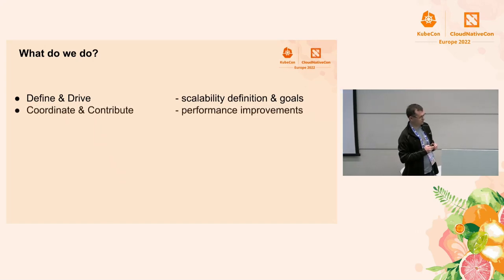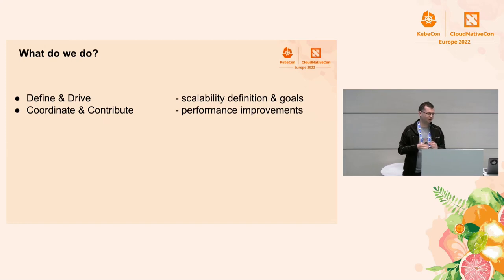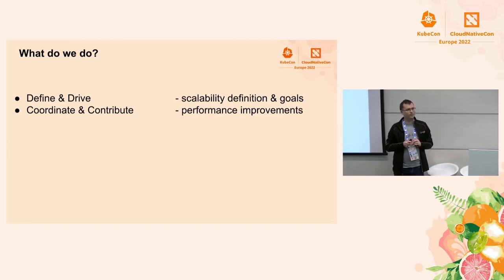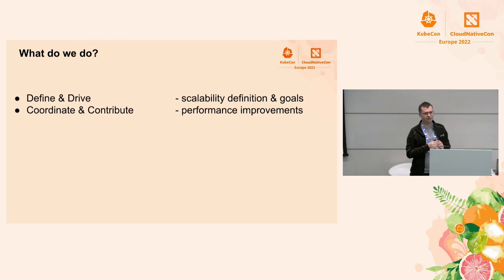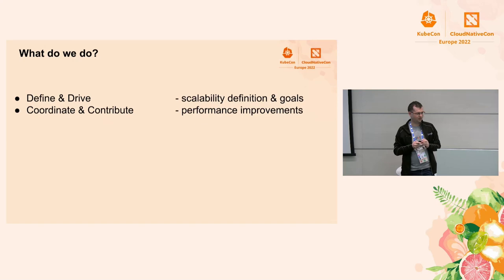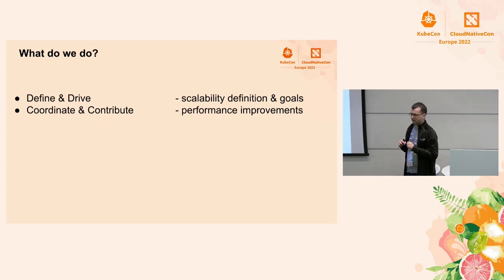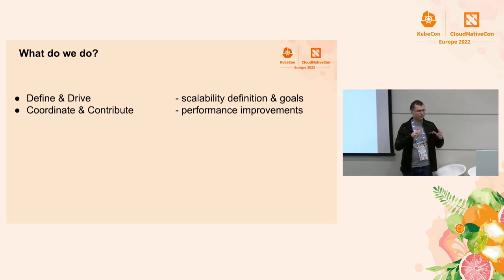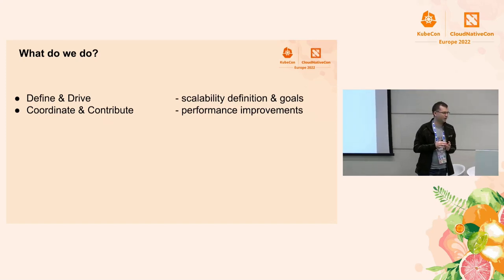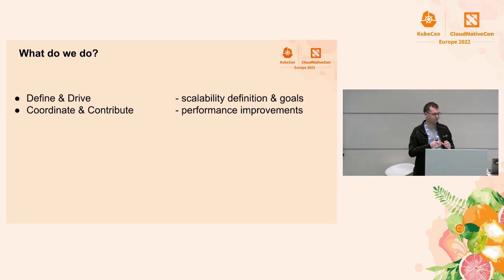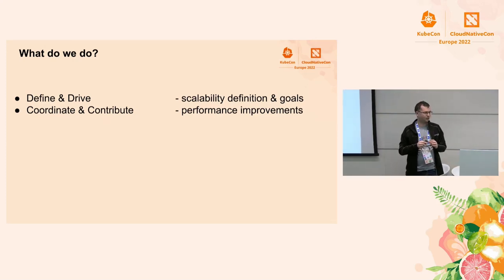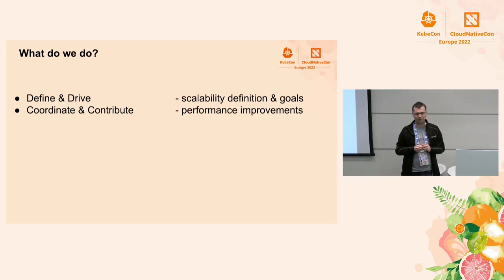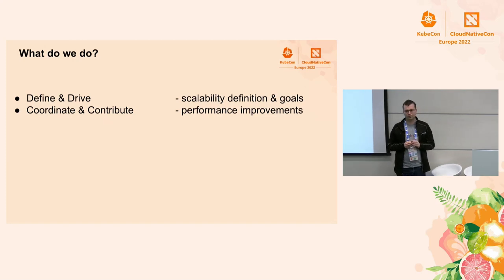Once we have those goals, we need to actually execute towards them. So driving and ensuring that the actual improvements needed to reach those goals is something we are working on. This doesn't mean in many cases that we are doing the improvements ourselves. If they fit into individual SIGs like SIGNode or SIG API machinery, we work with those SIGs and ensure they will be doing that, but we also often contribute ourselves. For any cross-SIG improvements, we coordinate those across SIGs.